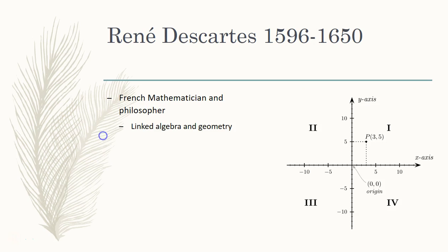If you think back to high school geometry, Descartes is the one who invented the Cartesian plane — it's named after him. With the Cartesian plane, he was able to link algebra and Euclidean geometry together. Among his many contributions, this was just one of the major ones that is really prevalent today, and a lot of his work influenced people like Isaac Newton and other mathematicians.